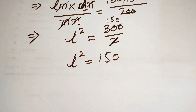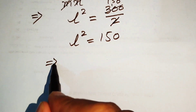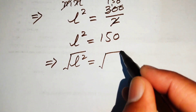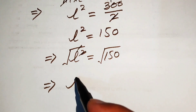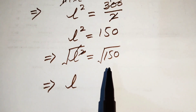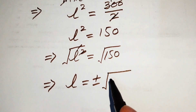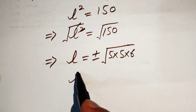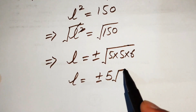Here we get the value of L squared equals 150. Because we need to find the value of L, we take the square root on both sides of this equation. When you take the square root on both sides, the square and square root cancel, and on the left-hand side we have L. We write the square root of 150 in simplified form: 150 equals 5 multiplied by 5 multiplied by 6.